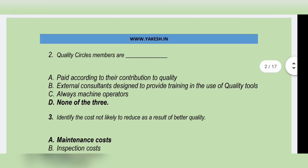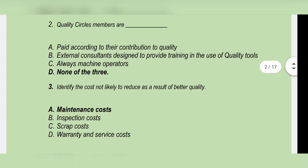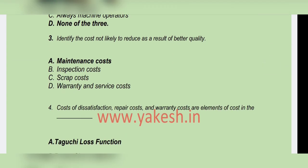Next question: Quality circle member — Option D. Next question: Identify the cost not likely to reduce as a result of better quality. Option A: Maintenance cost is the correct answer.